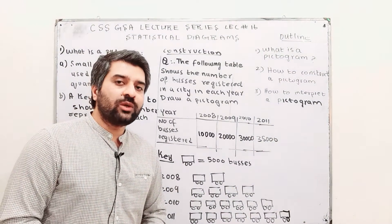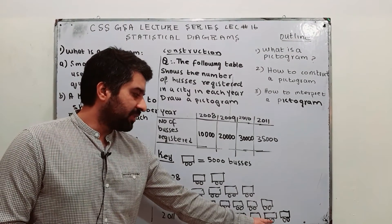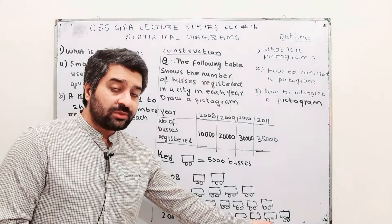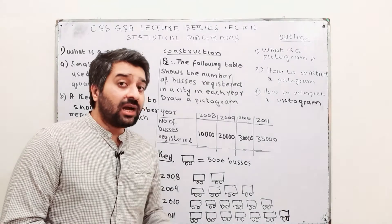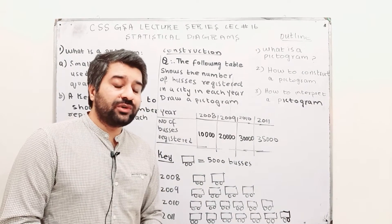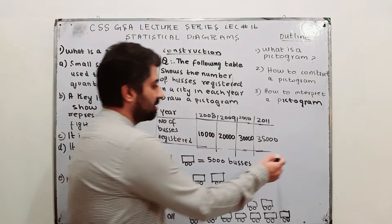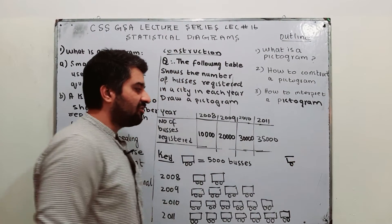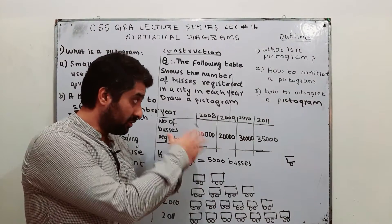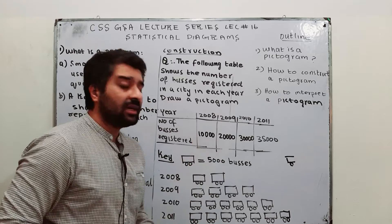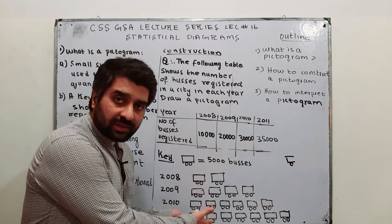Suppose the value had been 32,500 instead. You would draw six complete buses representing 30,000, and the remaining 2,500 would be represented by a half bus — because a full bus represents 5,000, so a half bus represents 2,500. That is how a half symbol is drawn and used in a pictogram.